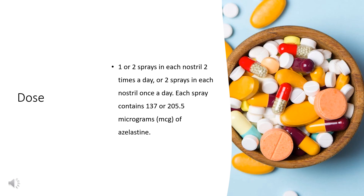Children younger than 2 years of age, use and dose must be determined by your doctor. For nasal dosage form (Astapro spray), for treatment of perennial allergic rhinitis: children 6 months to 11 years of age, 1 spray in each nostril 2 times a day; each spray contains 137 micrograms of azelastine. Children younger than 6 months of age, use and dose must be determined by your doctor.